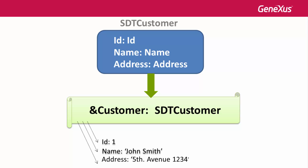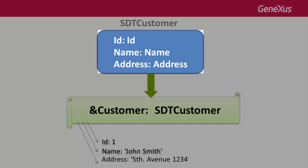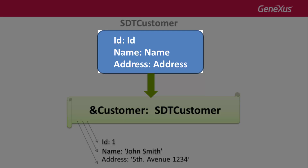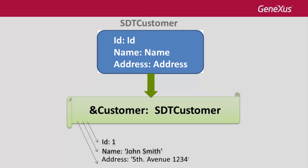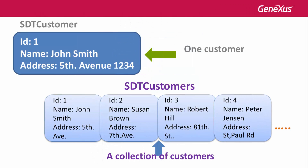We already saw that structured data types enable us to define structures that store several data corresponding to an entity. In this example, SDT Customer enables us to store information on a customer — the identifier, the name, and the address of one customer. In order to store data on several customers, we saw that we must define the structured data type and then indicate that it's a collection.